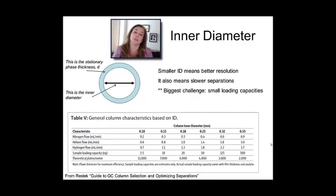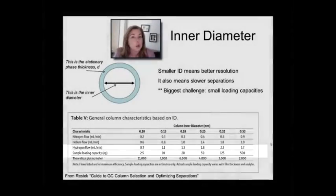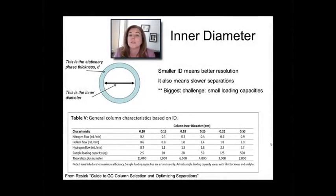The other thing you'll notice is sample loading capacity. That's actually one of the drawbacks of a very small ID capillary column. You really can't load a lot of sample in it, which means you're going to have to have an extremely good detector.